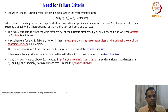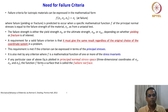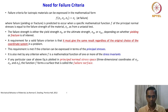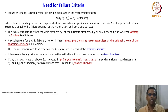If a particular case of the equation f = sigma_c is plotted in a principal normal stress space — that is, three-dimensional coordinates of sigma_1, sigma_2, sigma_3 — the function forms a surface called the failure surface. If our data points or stress values fall inside the surface they are safe; if outside, failure occurs. A failure surface can be either a yield surface or a fracture surface.